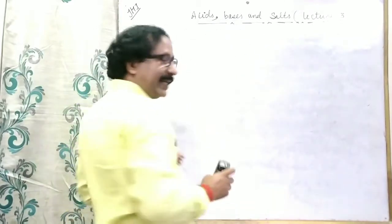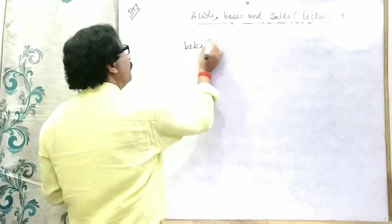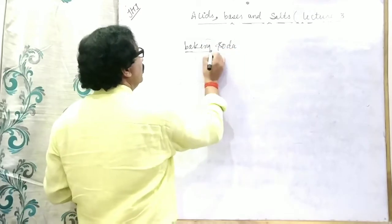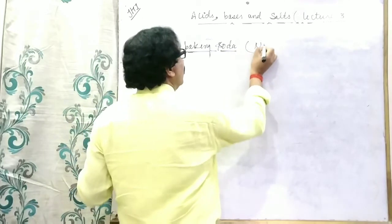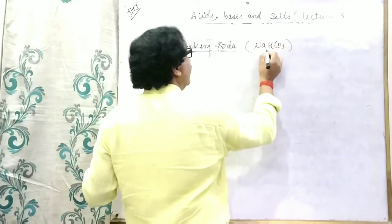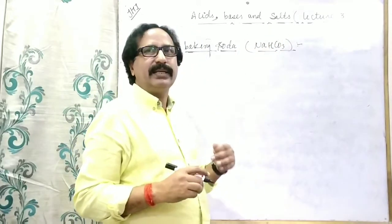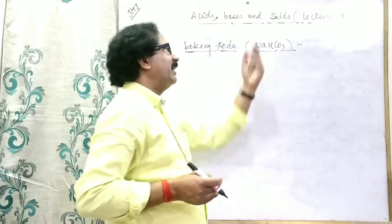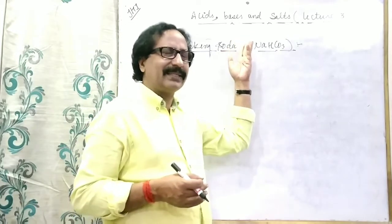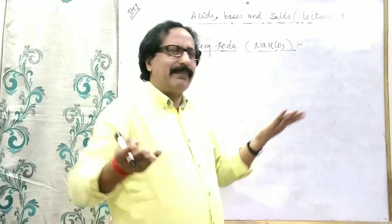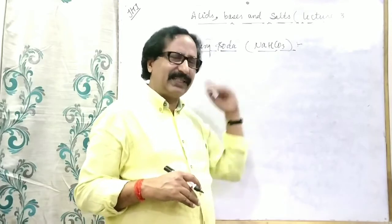Now the second compound: baking soda. Its chemical name is sodium bicarbonate and the formula is NaHCO₃ — sodium hydrogen carbonate, commonly known as baking soda. Caustic soda, which I have discussed before, I have discussed its properties. Everybody knows soap formation, neutralization reactions, and its use in different industries.